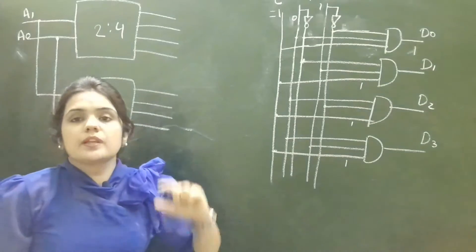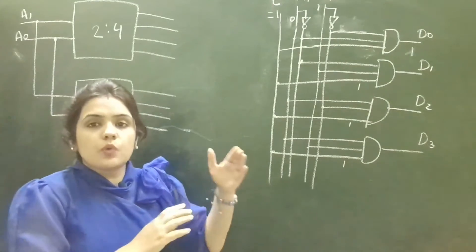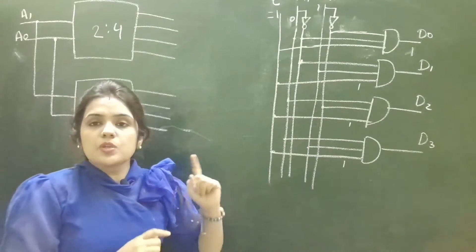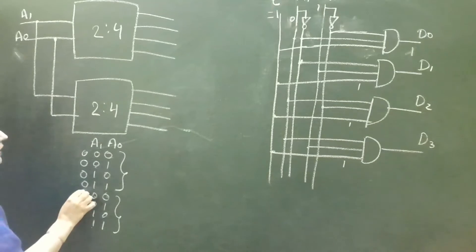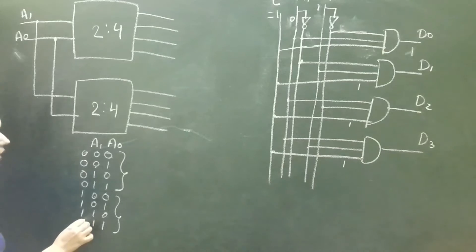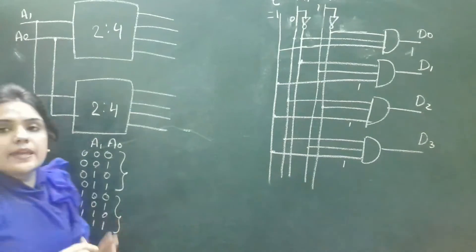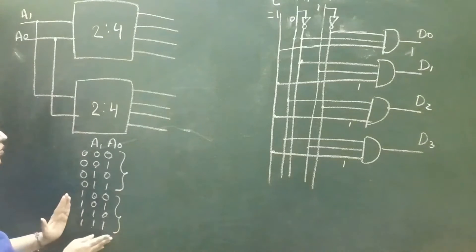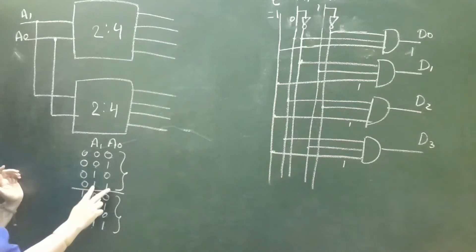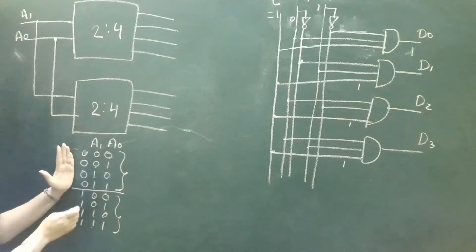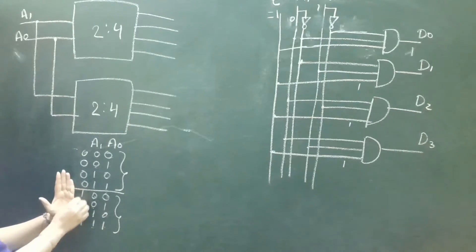We want to design a 3-to-8 line decoder, and we've seen the working of a decoder with enable input. For a 3-to-8 line decoder, we want 3 inputs. The possible values of these 3 inputs will be 000, 001, 010, 011, 100, 101, 110, and 111. You can observe that for the four values 000, 001, 010, 011, the value of the third input is 0, and for 100, 101, 110, 111, the value of the third input is 1.